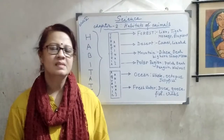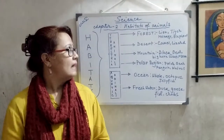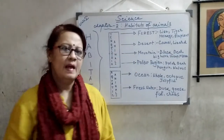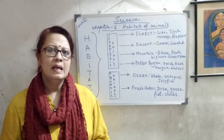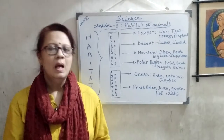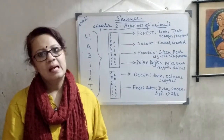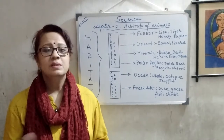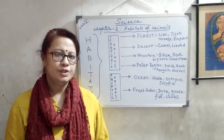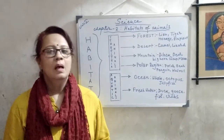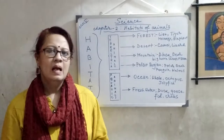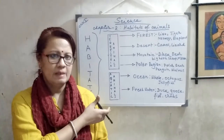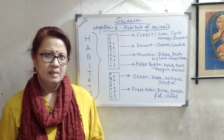Good morning students. Now is the time for our science class and we are in chapter 2, Habitats of Animals. In our previous two classes I already discussed the whole chapter, and in our previous class I discussed the objective type question answers on this chapter. Today I'll give you some question answers and definitions on this chapter, and before that let's have a recap.